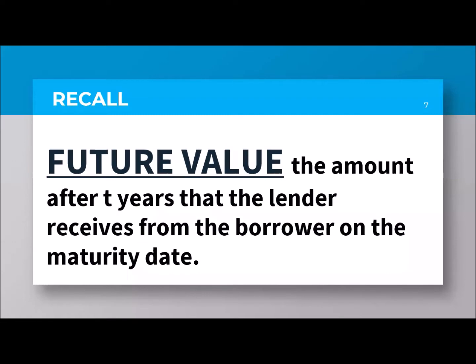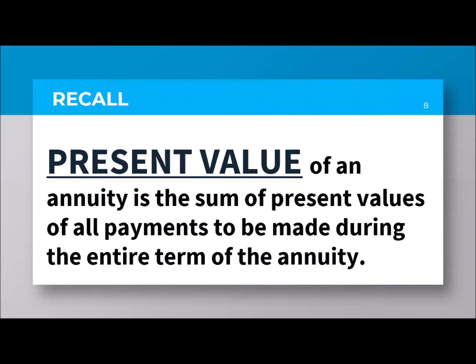The next one is the future value — the amount after a period of time that the lender receives from the borrower on the maturity date. That is the principal amount plus the interest earned, so that total is the maturity value or the future value. Then the last one is the present value, which talks about the sum of present values of all payments to be made during the entire term of the annuity — it is the basis of where our interest rate comes from.